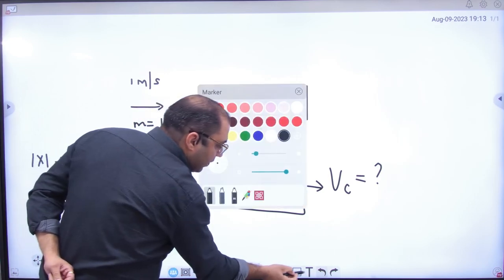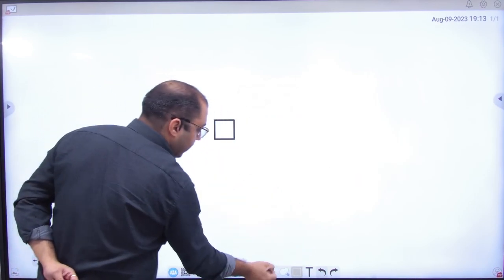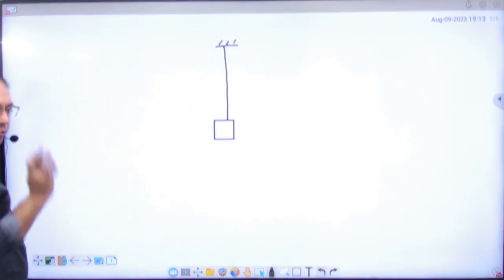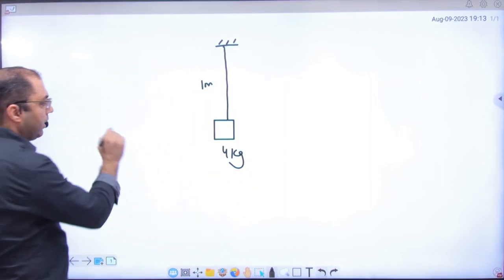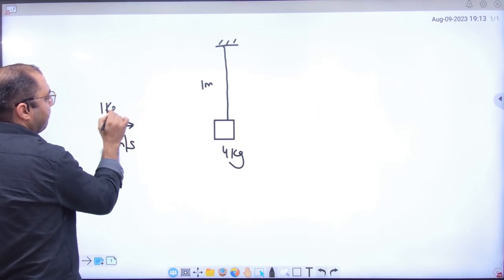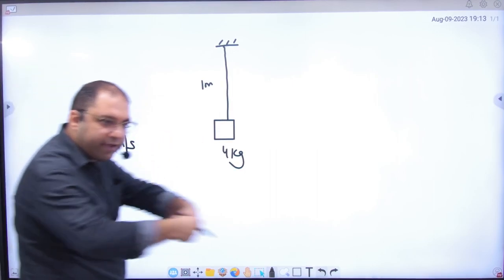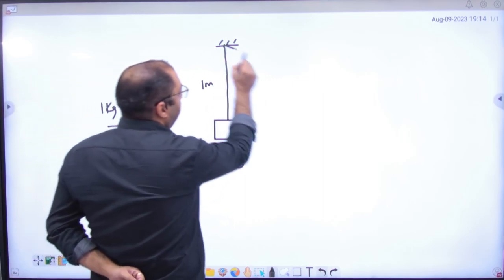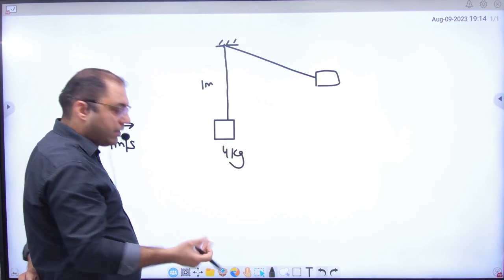So the question that I had given in the assignment was this question. Suppose this pendulum is like a block. Its mass is 4 kg. The length is 1 meter. There is a bullet. The bullet is 1 meter per second. Its mass is 1 kg. It's embedded in this. Both move. Tell the height. You have to calculate how much the height will cover. But the height will cover later. What will the first work?